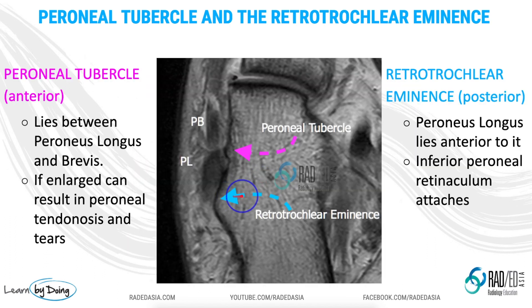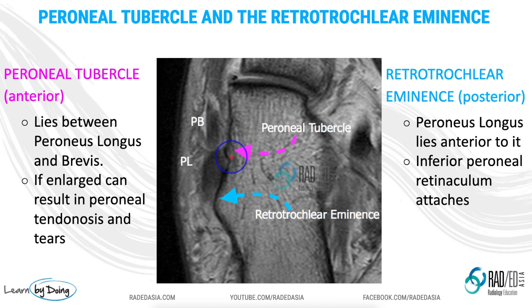On MRI, the most anterior bump you will see is the perineal tubercle, and more posteriorly is the retrotrochlear eminence. You can also differentiate these two by looking at the peroneus brevis and longus tendons. On this axial scan, peroneus brevis is anterior to the tubercle and peroneus longus is posterior to the tubercle, running in that groove seen on the lateral x-ray.